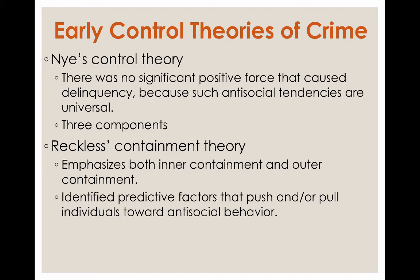Nye's control theory states there's no significant positive force that causes delinquency because antisocial tendencies are universal. He identified three primary components of control: internal control, formed through social interactions, which socializes a conscience to stop you from doing bad things; direct control, which controls a person's actions and whether they have the opportunity to commit a deviant act, including sanctions like jail or ridicule; and indirect control, which occurs when individuals are strongly attached to their early caregivers — for example, being afraid your mom would be upset if you got arrested, even though she's not there telling you not to do it.